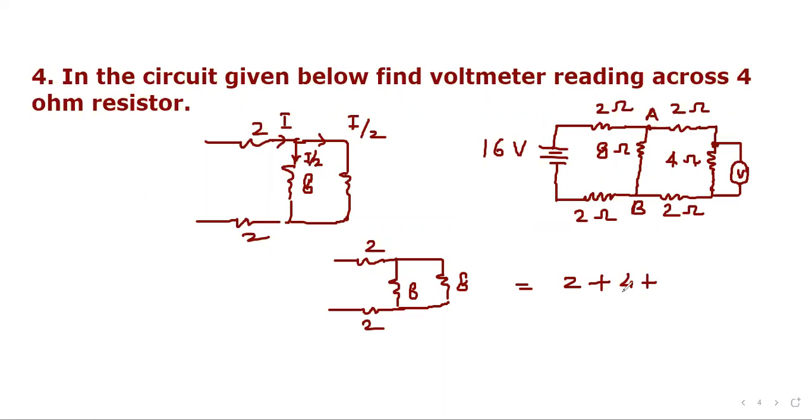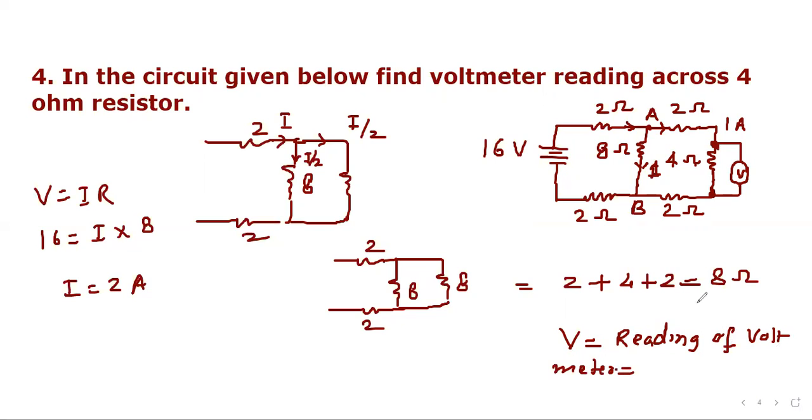So 4 plus 2 that is 8 ohm. So we find current V equals IR. V is 16, I is to be found, R is 8, from where we get I equal to 2 ampere. Now as I told you, so 2 ampere current will come up to here but it will get equally divided so 1 ampere. So 1 ampere will flow through this path and 1 ampere will flow through this path. So potential difference across these two points will be the reading of voltmeter which will be equal to IR. So I is 1 ampere and resistance is 4 ohm, 1 into 4 that is 4 volt.